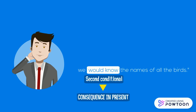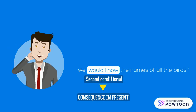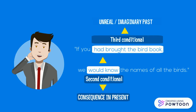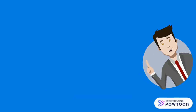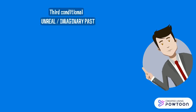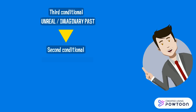And that consequence in the present is that Brenda and Arthur do not know the names of all the birds, because Arthur did not bring the bird book in the past. Let's look at some more examples when something unreal or imaginary in the past has a consequence in the present.